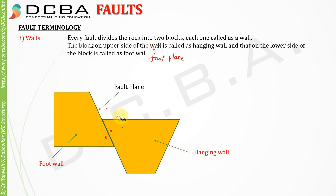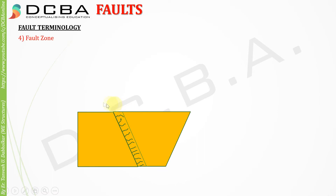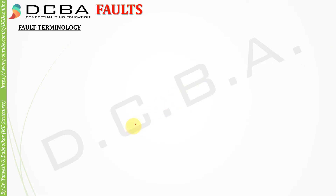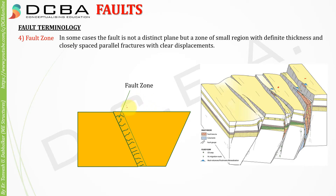Fault zone: in some cases, the fault is not a distinct plane but a zone of small regions with definite thickness and closely spaced parallel fractures with clear displacement. In this image you can see how these zones have been formed and the rock has moved relatively about that zone, not about a single plane. This is called a fault zone.